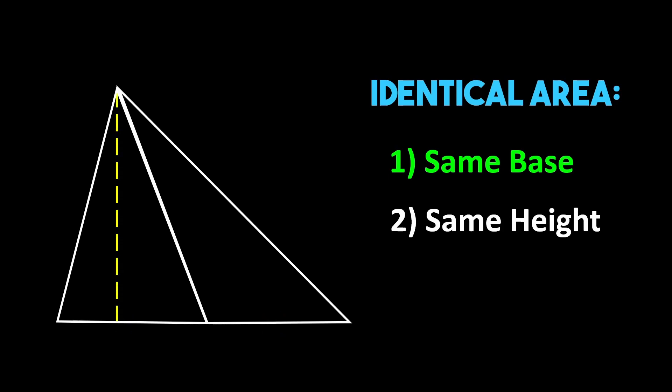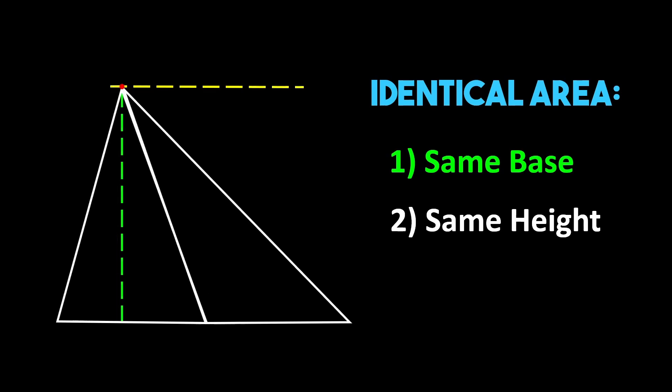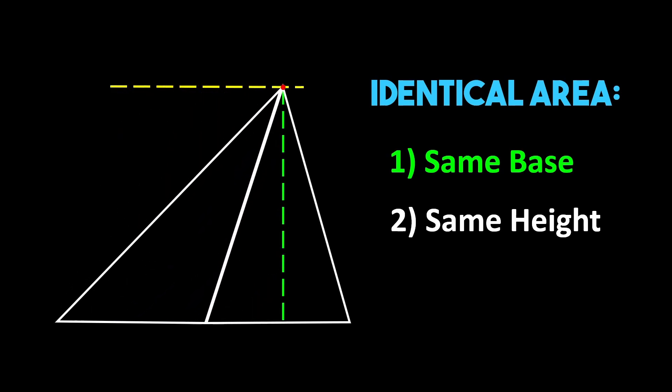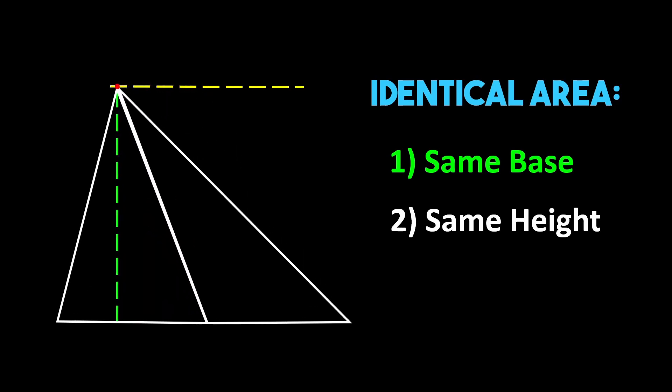Their heights however are a bit harder to show. The height of a triangle is the length of the line perpendicular to its base that goes from the base to the topmost point of the triangle. Since both triangles share the same base and topmost point their heights must be equal but to visualize this let's draw a horizontal line through this point. If we draw a vertical line that spans the distance between the base and this new horizontal line we can construct a nice visual that shows how both triangles share the same height.